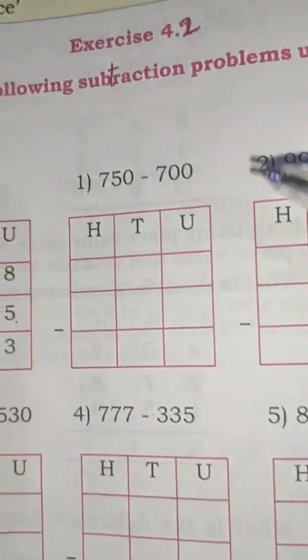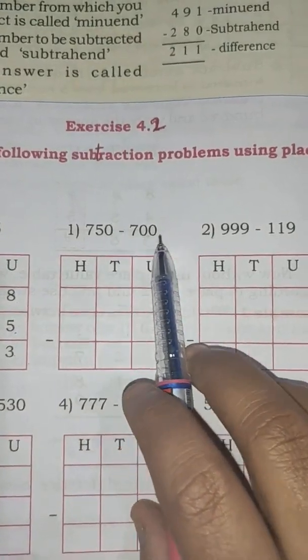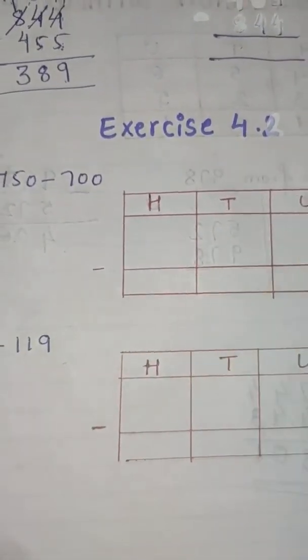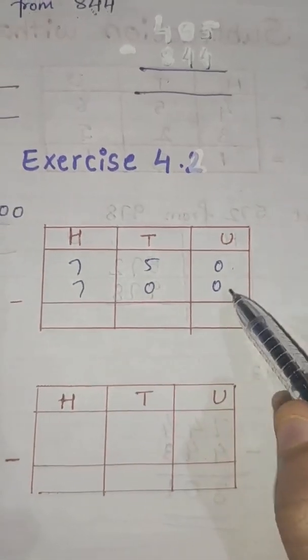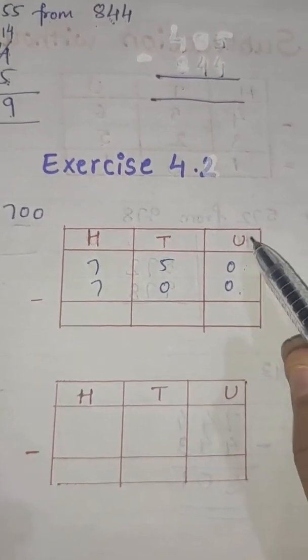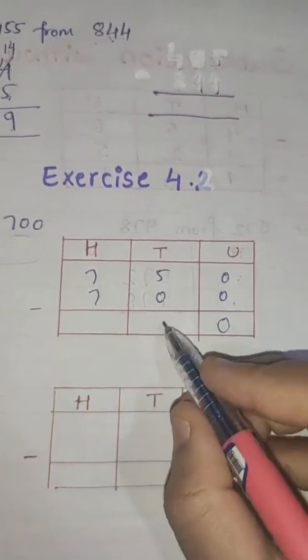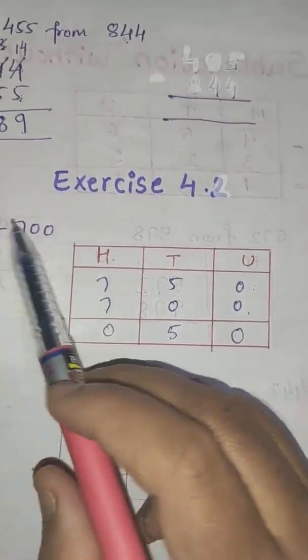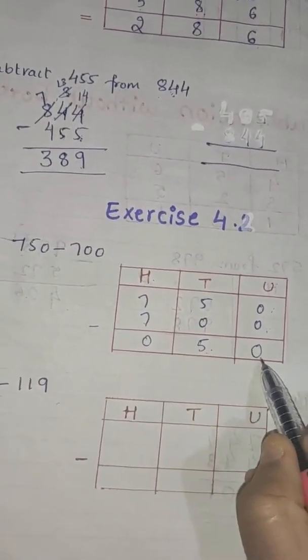Now let us do this one: 750 minus 700. I am going to arrange this number into the place value table. Now let us subtract the numbers from the units place. 0 minus 0 is 0. 5 minus 0 is 5. Next, 7 minus 7 is 0. So the difference between these two numbers is 50.